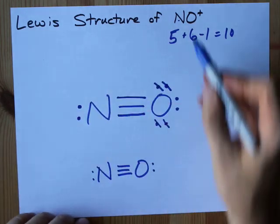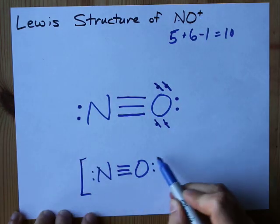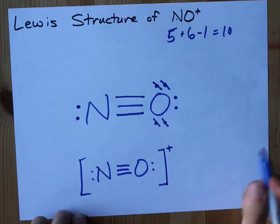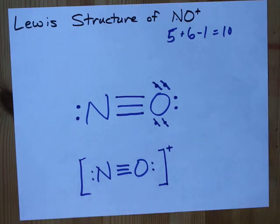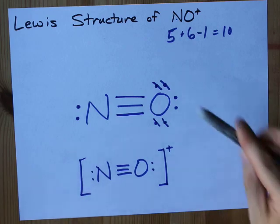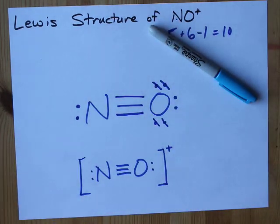I want to point out Lewis structures for ions have square brackets around them with the ion charge written as a superscript on the bracket. This is your final Lewis structure. Thanks for sticking with me, and best of luck.